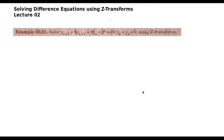Good morning everybody. In this lecture we will solve one more problem which is a continuation of the previous lecture. So let's solve this problem: y[n+2] + 3y[n+1] + 9y[n] = 3^n, with y(0) = y(1) = 0, using Z-transform. What do we do to solve such a difference equation using Z-transformation?